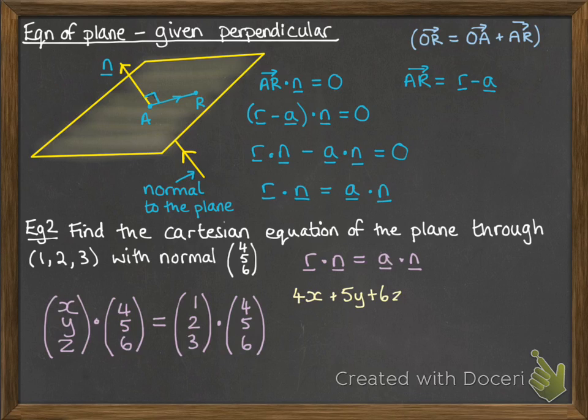So then working through the left-hand side, the scalar product would be 4X plus 5Y plus 6Z, and the right-hand side will be 1 times 4 plus 2 times 5 plus 3 times 6. And then just tidying that up, we get the Cartesian equation for the plane, 4X plus 5Y plus 6Z equals 32, quite nice and easily.